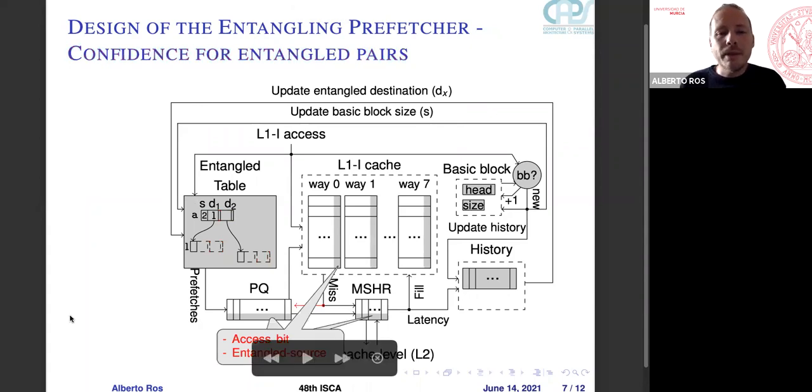For updating this information, we need the access bit to know if the line has been accessed by the core or just prefetched by the prefetching engine. And then entangled source, because we need to locate—in this case the entangled source will be A—so we need to locate for the cache line L that A is the source that issued that prefetch in order to adjust the confidence.